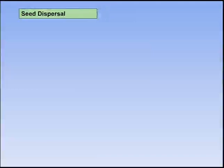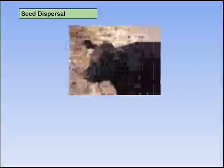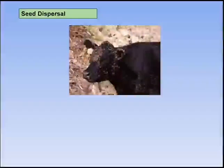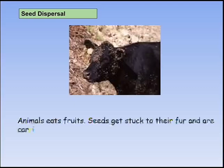Plants also need to have their seeds spread over a wide area. Animals eat fruits, and seeds get stuck to their fur and are carried away and dispersed at a distance. This is called seed dispersal.